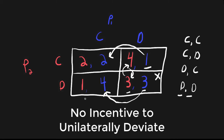We can do the same thing when player two plays don't confess and player one plays confess. Does player two have an incentive to deviate? Yes, because if player two switches his strategy from don't confess to confess, he gets a reward of two, which is better than one. So this is not a Nash equilibrium, and that profile is also not a Nash equilibrium.